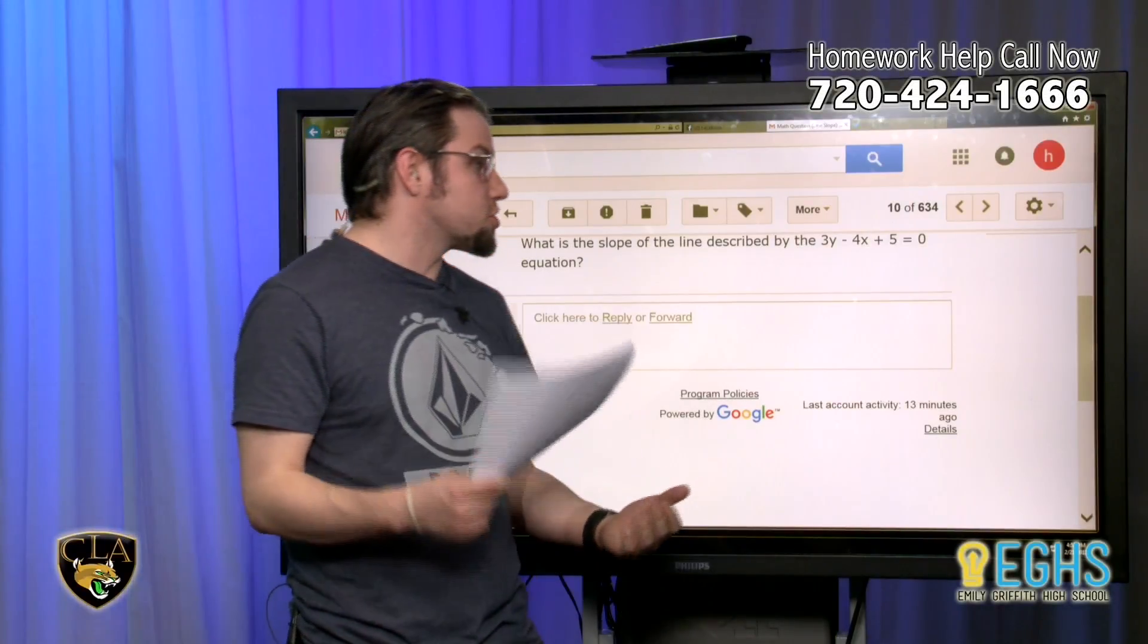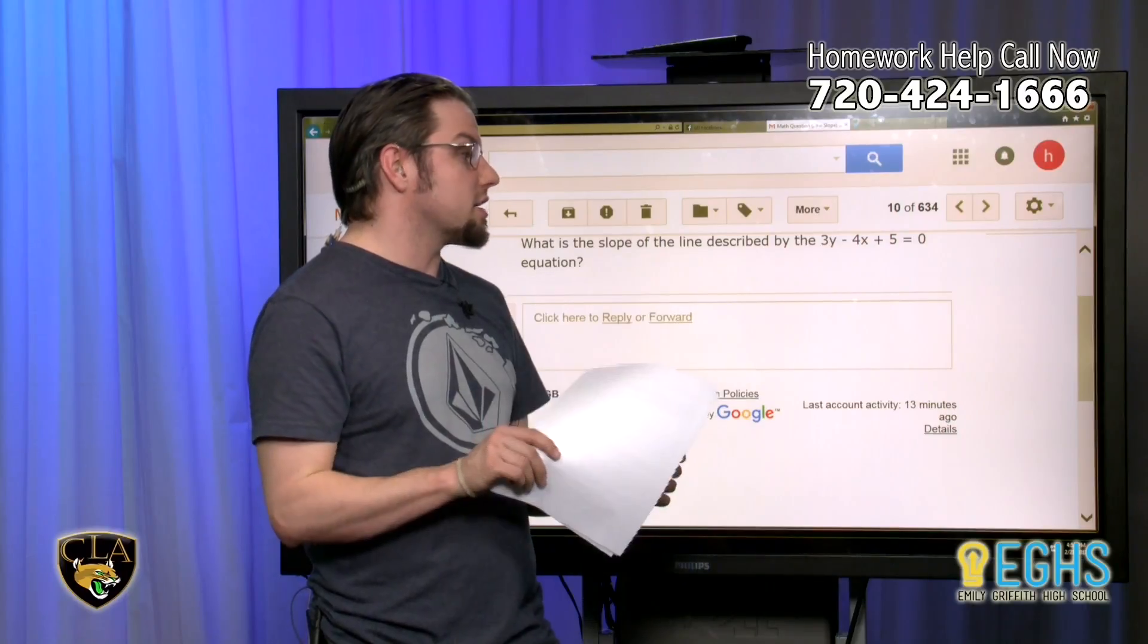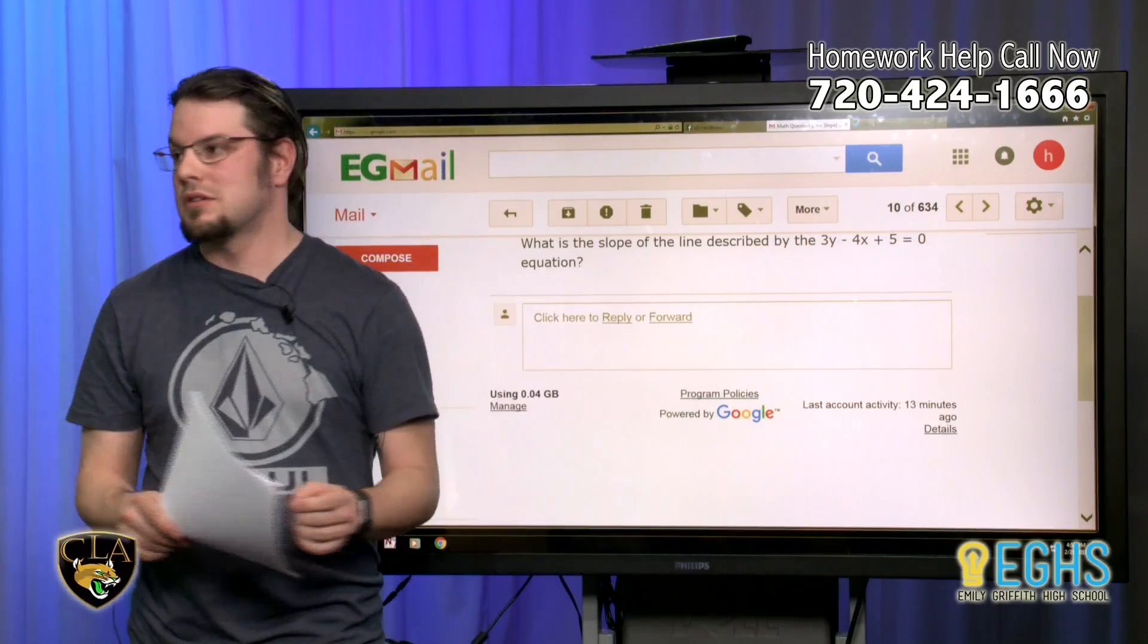What is the slope of the line described by the 3y minus 4x plus 5 equals 0 equation?